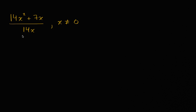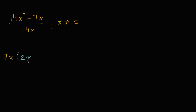Now let's actually try to simplify it. When you look at the numerator and the denominator, every term is divisible by x and every term is divisible by seven. So we can factor 7x out of the numerator. We can rewrite the numerator as 7x times — factoring 7x out of 14x² leaves 2x, and factoring 7x out of 7x leaves one.